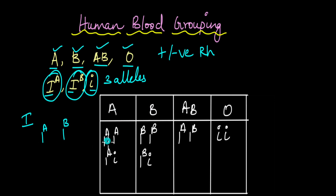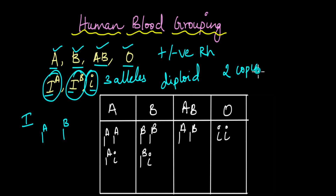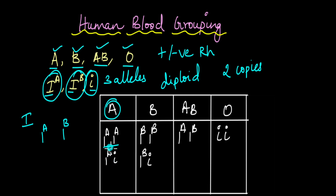For these blood groups, this is the genotypic pattern. Remember that humans are diploid organisms, which means we can have only two copies of each allele. Even though there are three alleles, we can have only two alleles at a time. For blood group A, the possible genotypic combinations are homozygous dominant IA/IA, or heterozygous IA and small i.